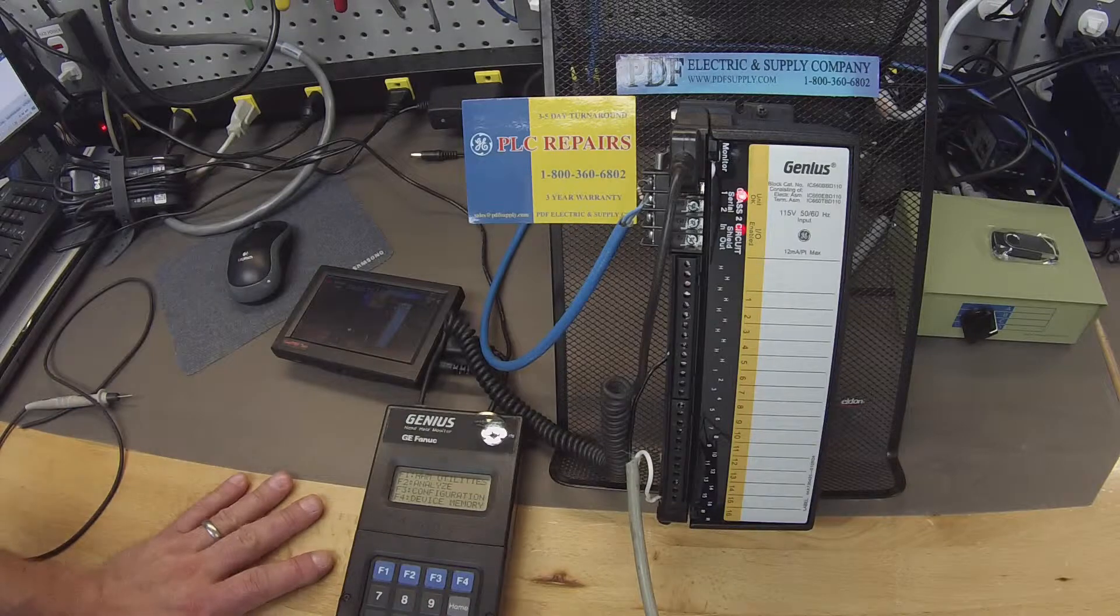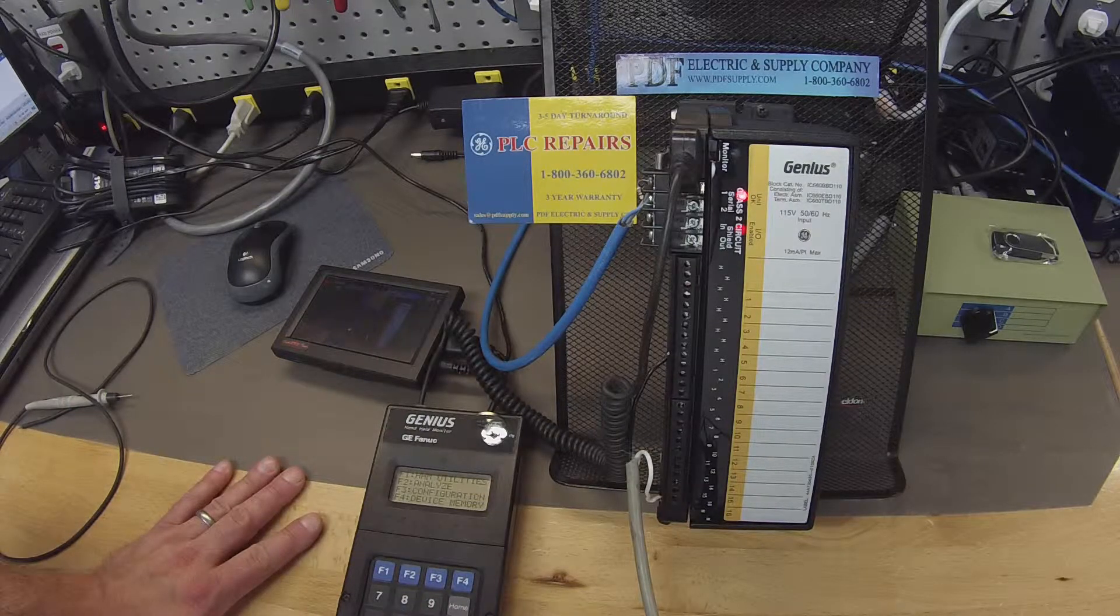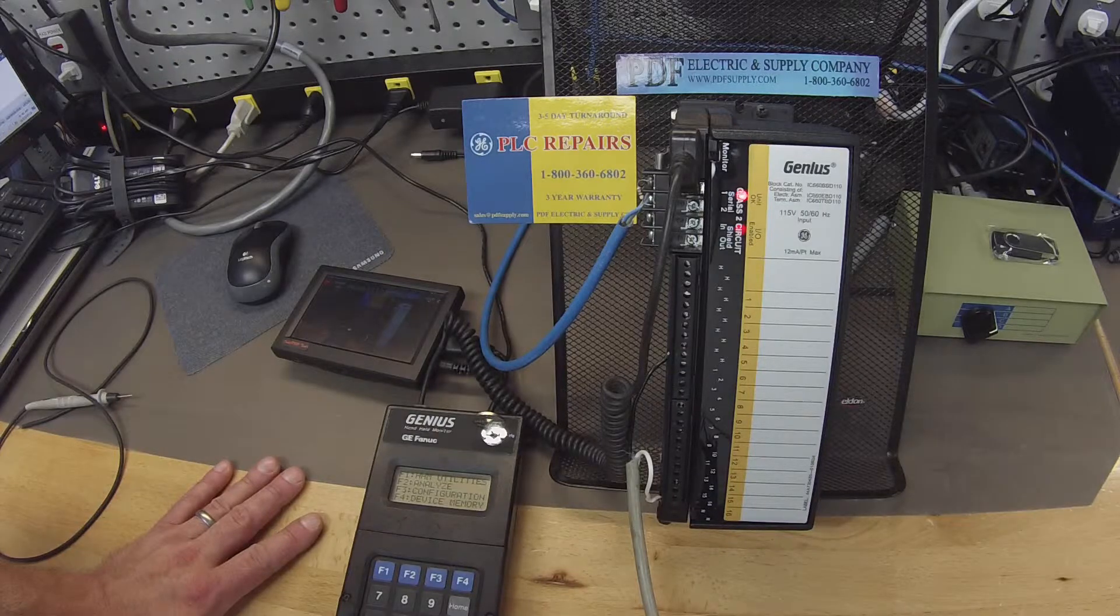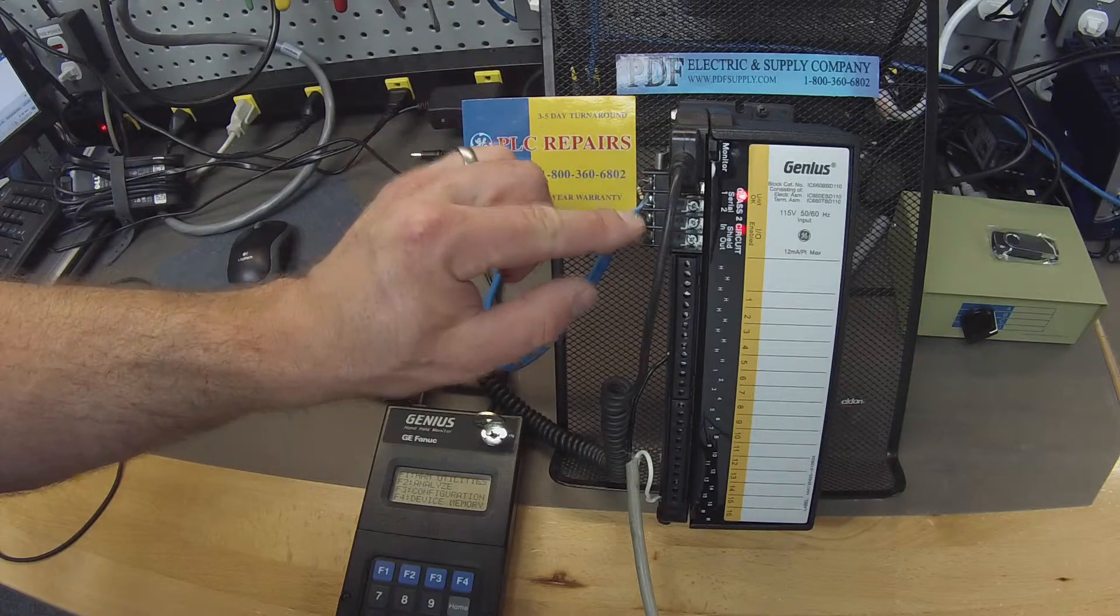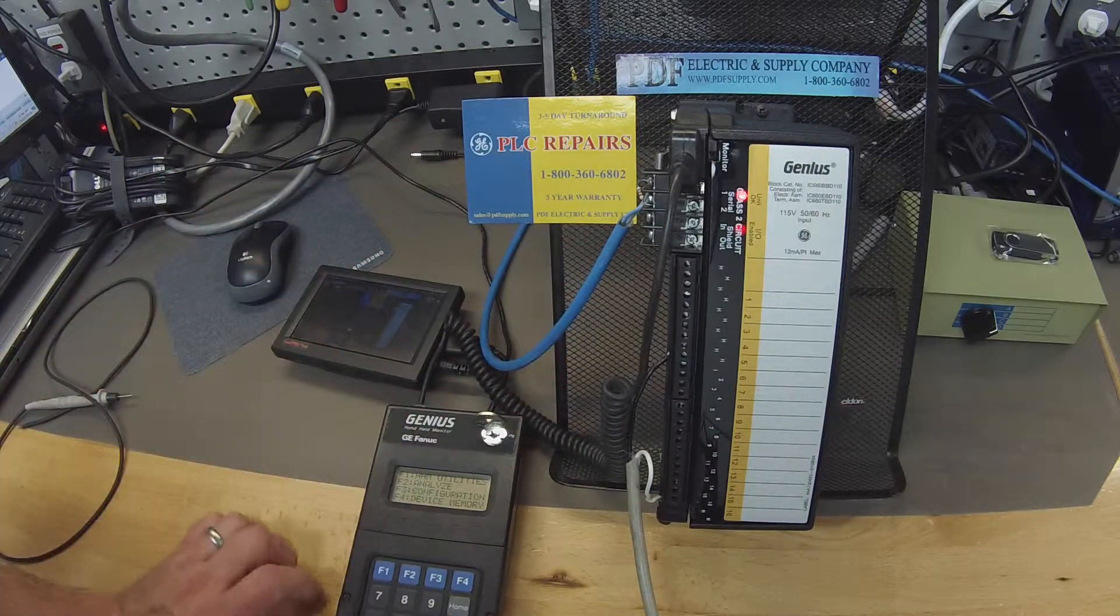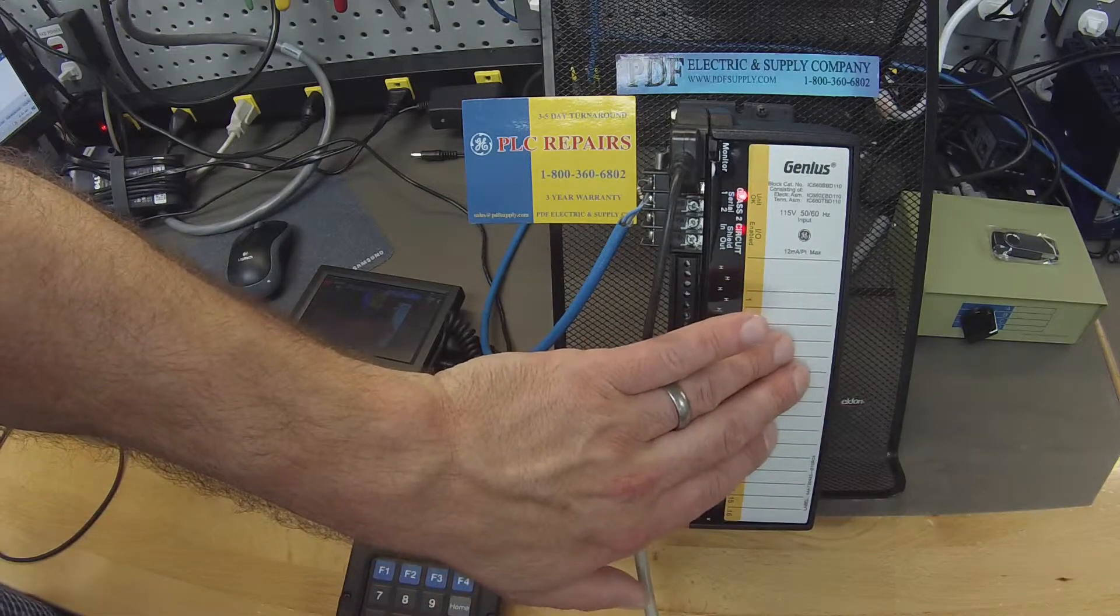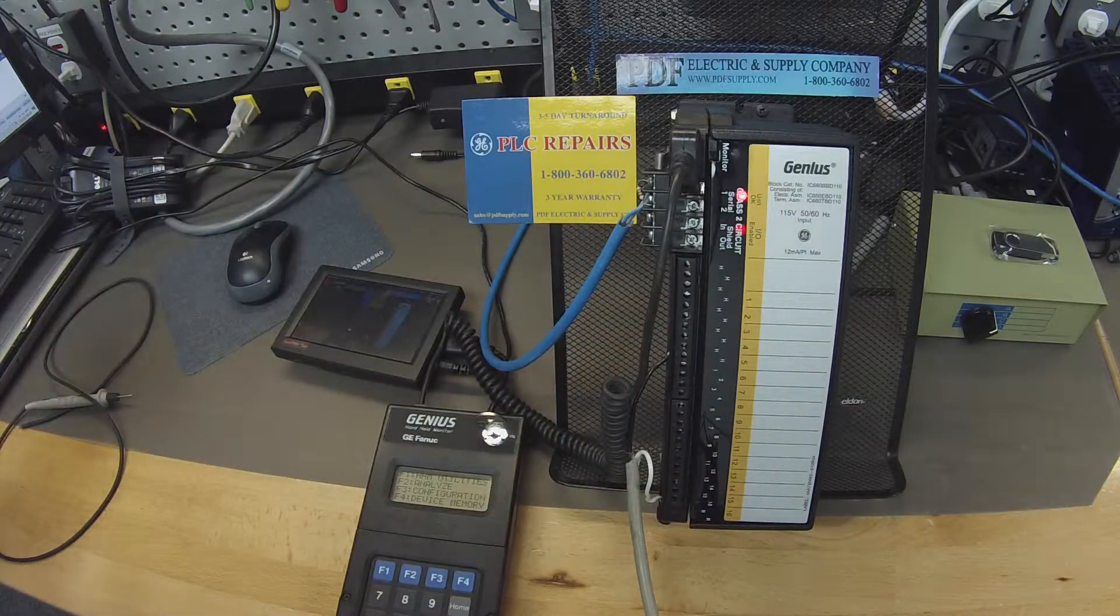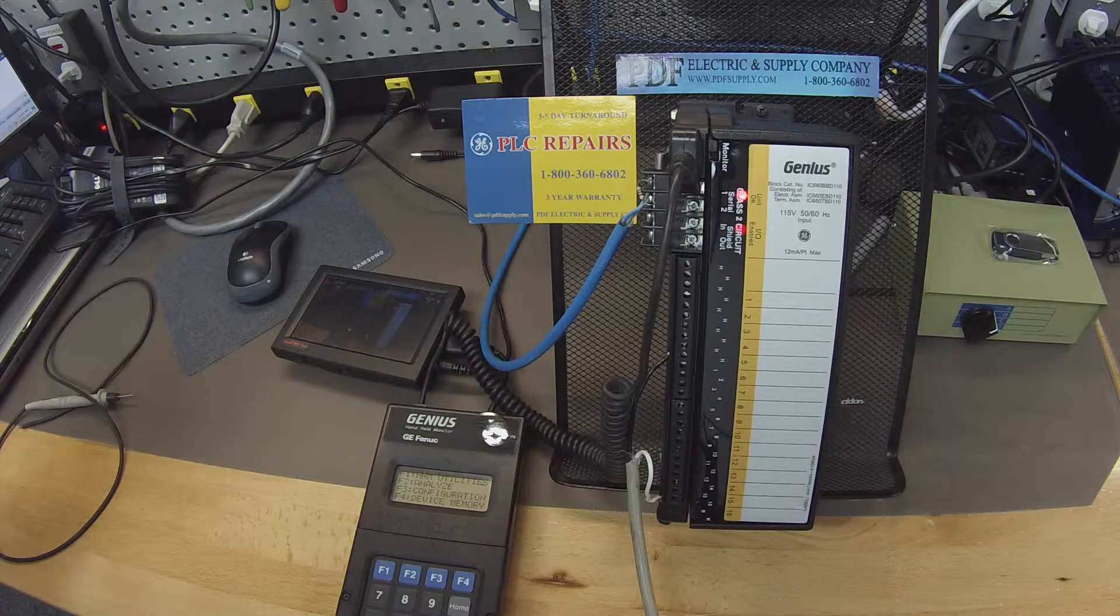Now, jumping back to the genius block for a moment here. This is part of the physical test, the actual probing of the inputs. Now, we have an IO enabled light on. That means that it's communicating with the genius bus controller, which is good. We also want to make sure that all the inputs that are related to this block at this address are also reporting in our input table on Proficy Machine Edition. That'll be the last step.